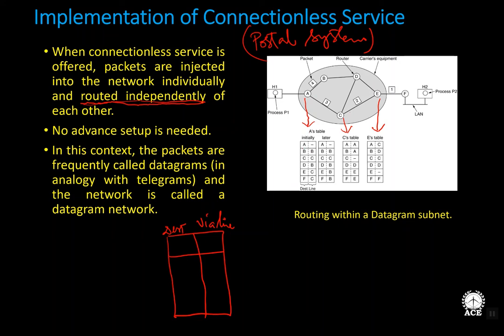Because connectionless service involves no dedicated path, routing table entries can change dynamically. For instance, packets 1, 2, and 3 of a message from A to F were initially sent via C. Later, the routing table got updated and packet 4 was sent via B instead. So different packets of the same message can take different routes — that is the essence of connectionless or datagram networking.